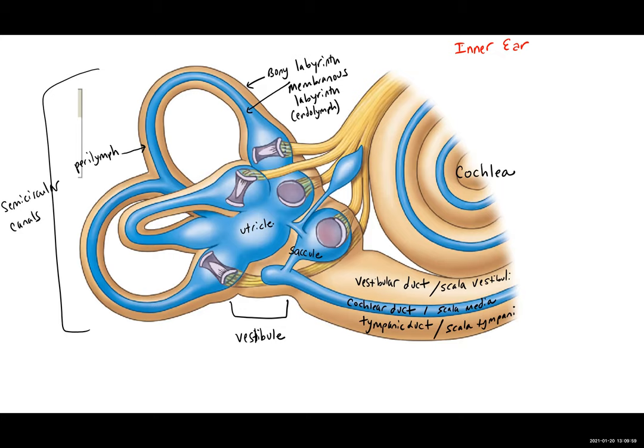The utricle and the saccule contain what are called the maculae. When we do an A-E ending, that's plural. At the base of each semicircular canal, we have the ampulla, the singular version, or ampulae for plural.